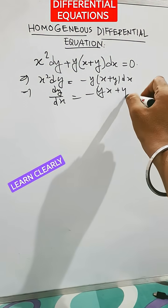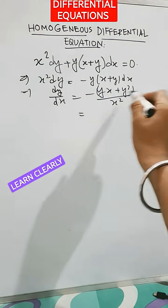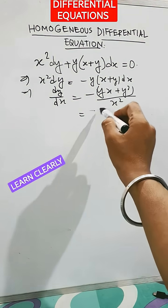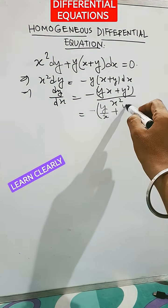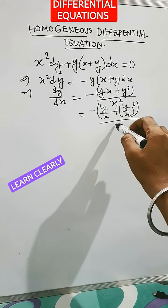Now divide both parts, numerator and denominator, by x². So it will be minus (y/x + (y/x)²) divided by 1.